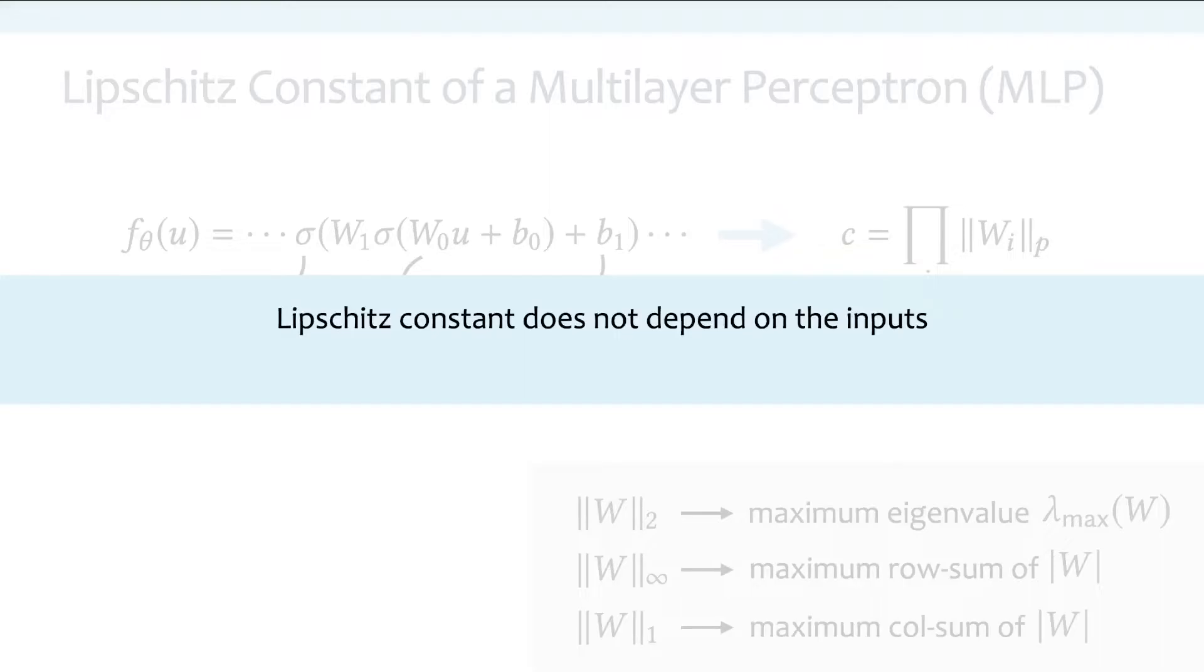And the key observation of this formula is that the Lipschitz constant c does not depend on the input. Basically, it does not involve any x or u or t or anything. It only depends on the weight matrices of the model. So if we have a small Lipschitz constant, in other words, we have a small c, then it can guarantee smoothness everywhere because it's a property only defined based on the weights, not dependent on the input.